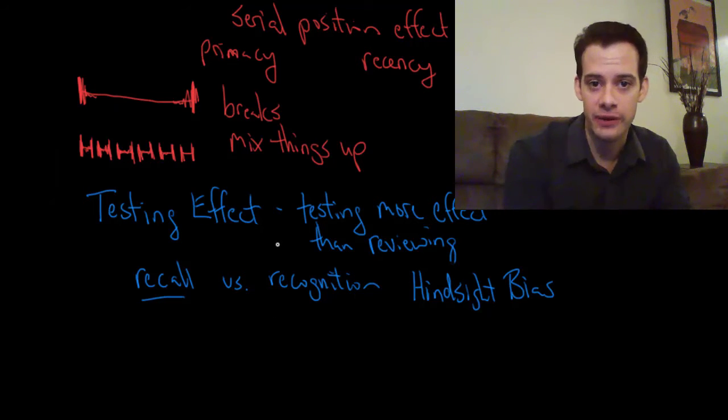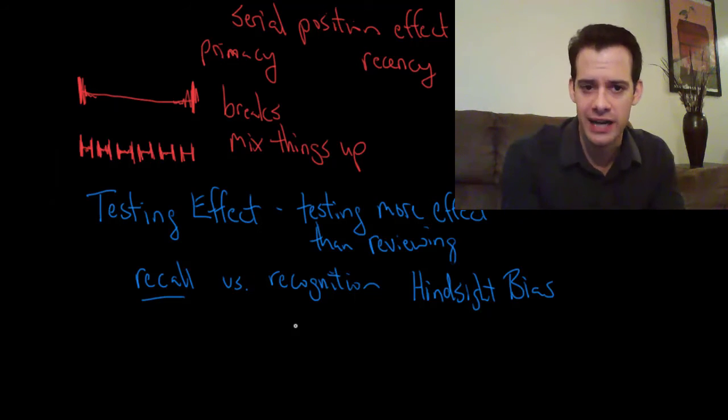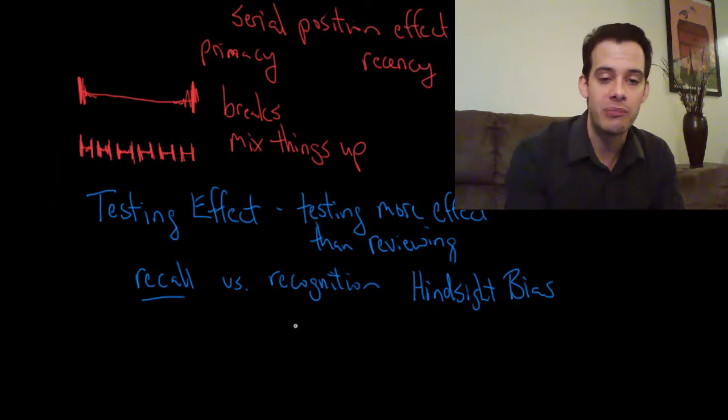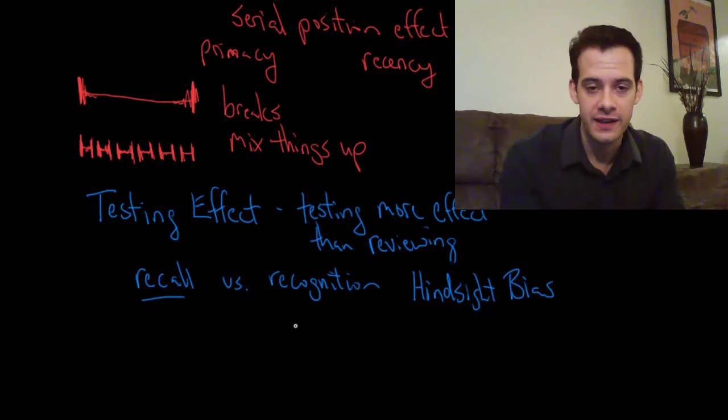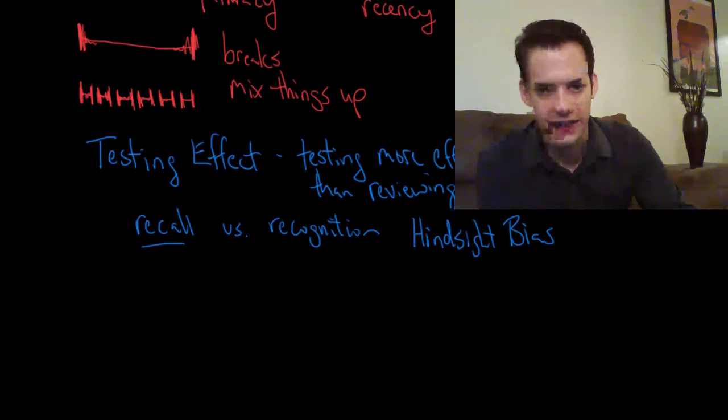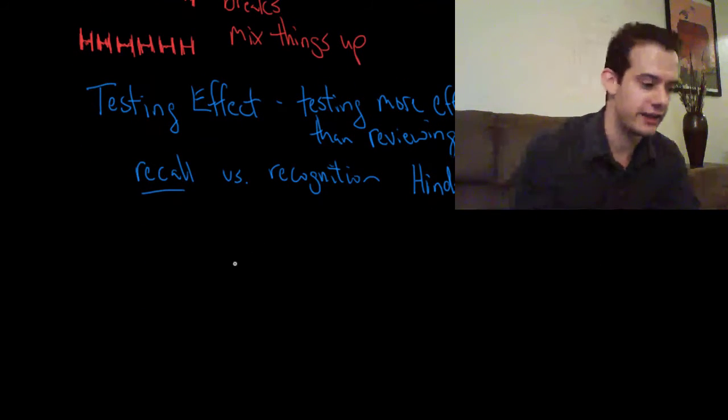So test yourself frequently and this doesn't have to be by yourself. One of the best ways to do this is to study with a friend and test each other. You can ask each other, explain this experiment to me. Or can you tell me why does this study matter? What was the purpose of that? Or can you tell me Schachter's seven sins of memory? Force each other to try to come up with the information. What you'll find is if you're explaining to each other and testing each other you'll probably have a much more effective review session. And it's also a little bit more interesting than simply rereading the chapter over and over which bore you to tears.